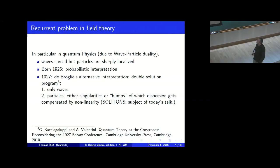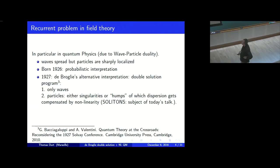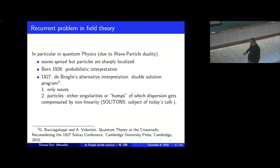De Broglie believed that the world was realist and that the content of the Schrödinger wave function was not related to probability. He believed that two waves were necessary to describe what we call a corpuscle. There was the Schrödinger wave, and there was also a peaked wave — a singularity — that could be an infinite singularity or simply a hump, what we now call solitons, for which the dispersion gets compensated by the nonlinearity. This is what is called the double solution problem.